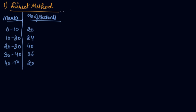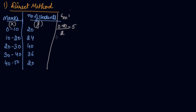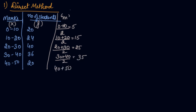Let's understand the direct method with a question. These are the marks obtained in English by class 10 students, and these are the number of students. The marks variable is x and the number of students is frequency f. First, calculate the mid-value of each class: 0+10÷2 = 5, 10+20÷2 = 15, 20+30÷2 = 25, 30+40÷2 = 35, and 40+50÷2 = 45.